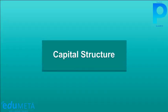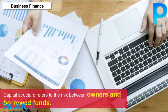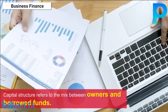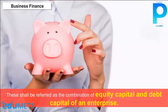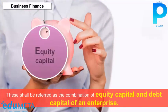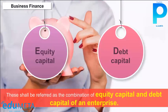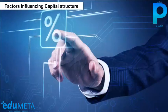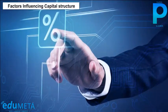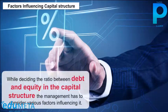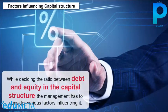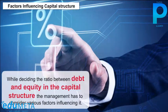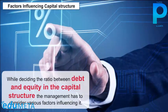Capital Structure: Capital structure refers to the mix between owners' and borrowed funds — the combination of equity capital and debt capital of an enterprise. While deciding the ratio between debt and equity in the capital structure, management has to consider various influencing factors.